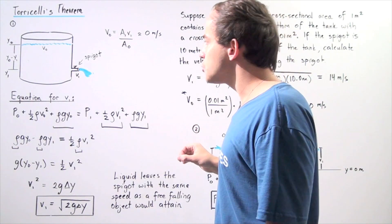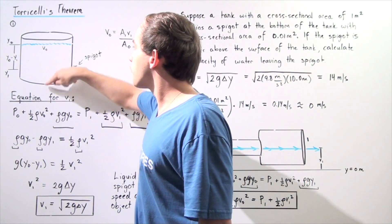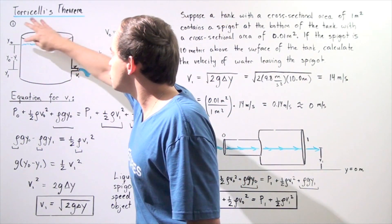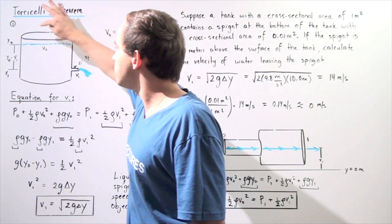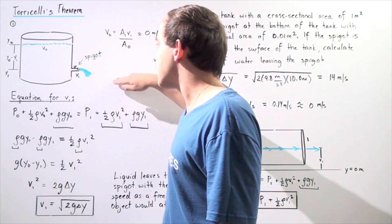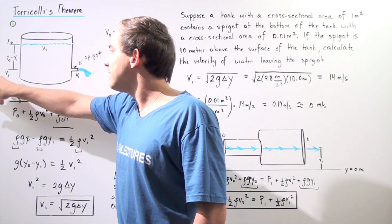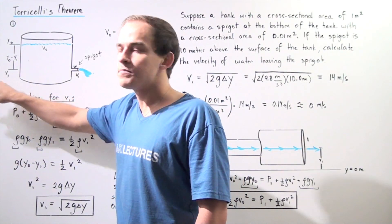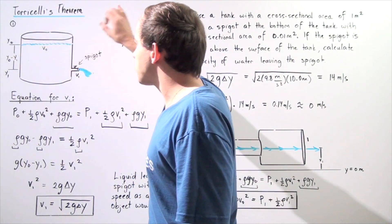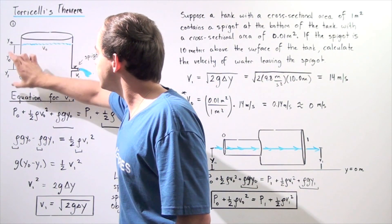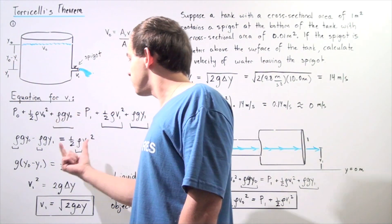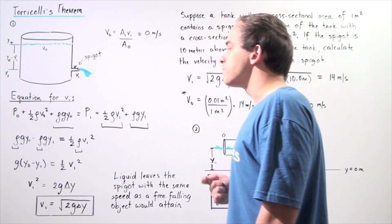Let's also define our height variables. The vertical distance from the ground to the surface of the fluid is Y0, and the vertical distance from the ground to the spigot is Y1. The change in distance from the spigot to the surface of the water is therefore Y0 minus Y1, which will become important in just a moment.